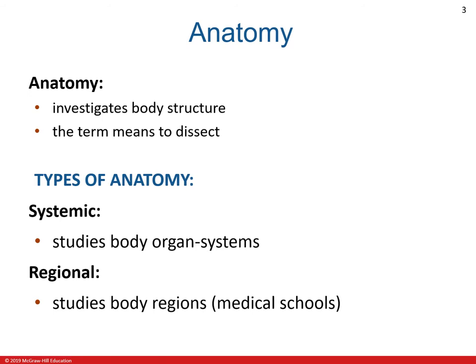There are two basic approaches to the study of anatomy: systemic anatomy and regional anatomy. Systemic anatomy is the study of the body by system, such as cardiovascular, nervous, skeletal, and muscular systems — the approach taken in most introductory textbooks. Regional anatomy is the study of the organization of the body by areas, such as the head, abdomen, or arm, where all systems are studied simultaneously — the approach usually taken by most medical and dental schools.